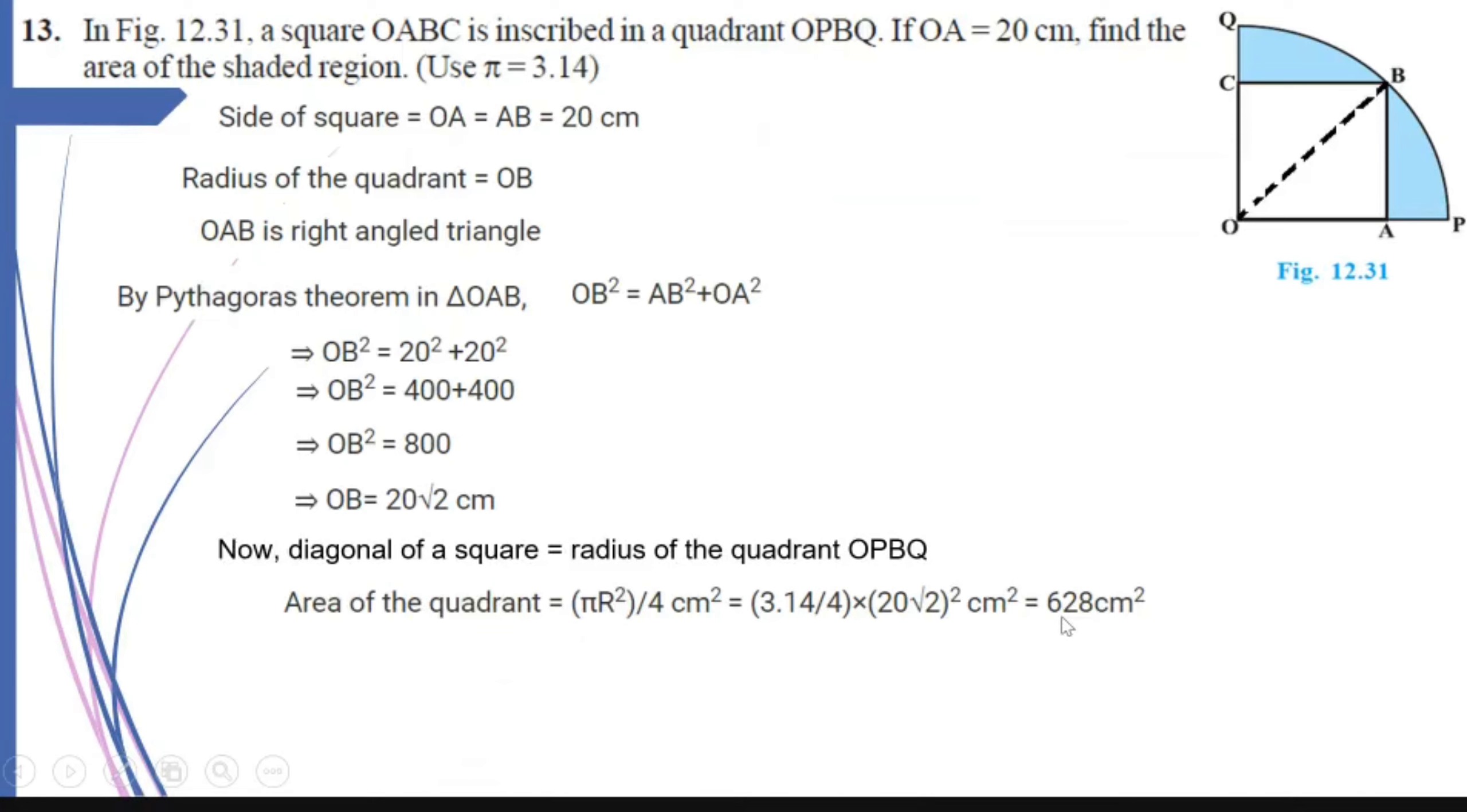So from the quadrant, if I subtract the area of the square, what is that? Area of the square is equal to 20 squared, that is 400. So from 628, if I subtract the area of the square, that is 400, I get the answer equal to 228 cm squared as the area of the shaded region.